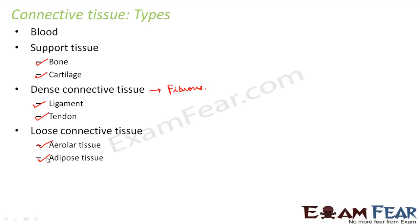Loose connective tissue, in contrast, will have some empty spaces. Unlike dense connective tissue which has more fibers, in loose connective tissue the ground substance also plays a role. Under loose connective tissue we will talk about areolar tissue and adipose tissue. These are the types of connective tissue we are going to discuss in this lesson. Let us start our discussion with blood.